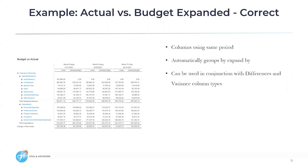If you have set up the report correctly, this is how it should appear. The columns are using the same period, so Sage Intacct automatically groups on that expand by. This can also be used in conjunction with the difference and variance column types.